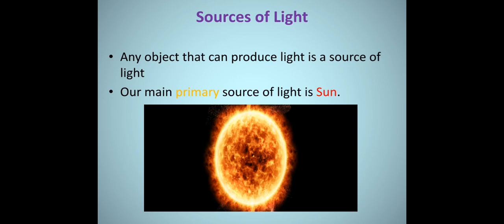Any object that can produce light is a source of light. Our main primary source of light is the Sun. There are many more sources of light, like candles, lamps, bulbs, and others.